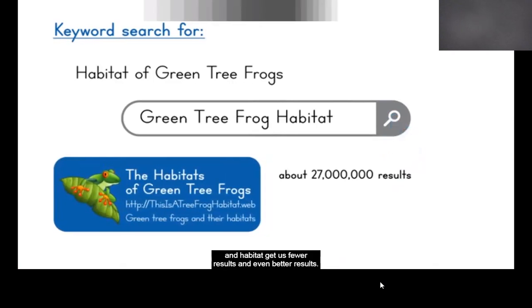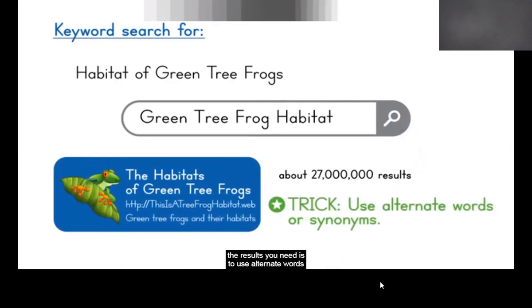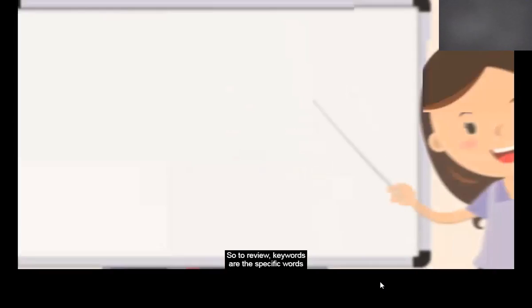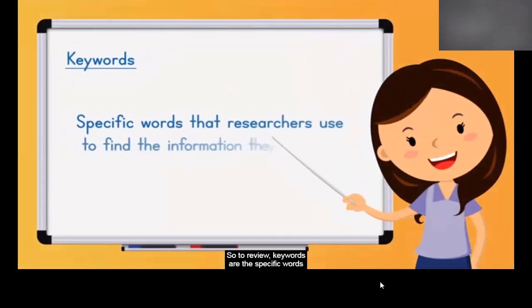One last trick to make sure you're getting the results you need is to use alternate words and synonyms for some of the words that you might already have. In this case, you might substitute the word environment for the word habitat and see how that impacts your results.